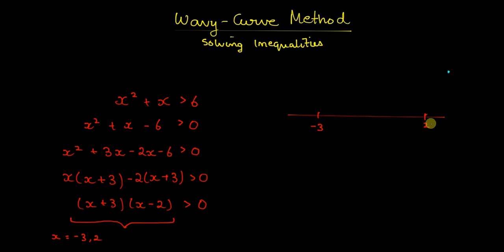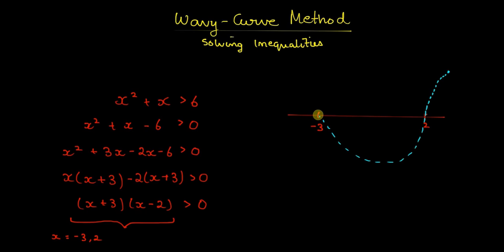We look at the powers of each factor. For x equals 2 we look at (x-2) — it has an odd power, so the graph will cross it and continue. For x equals minus 3, (x+3) also has an odd power, so the curve will cross through it as well. Always start from the top right corner.